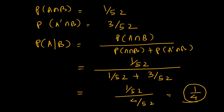Solving this: P(A intersection B) is 1 by 52, because there is only one card which is both a 10 and a spade out of 52. P(A complement intersection B) is 3 by 52, since there are three other card types that are 10 but not spade. Putting these into the formula, the denominator becomes 1 by 52 plus 3 by 52, and simplifying gives 1 by 4.